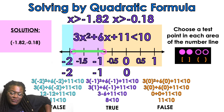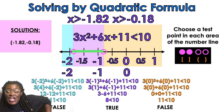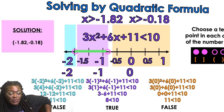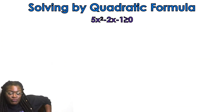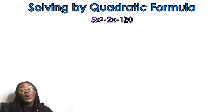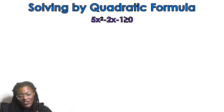In interval notation, the solution looks like: negative 1.82 comma negative 0.18, with parentheses on both sides because we have open circles. Parentheses, open circles — all of those are the same thing.